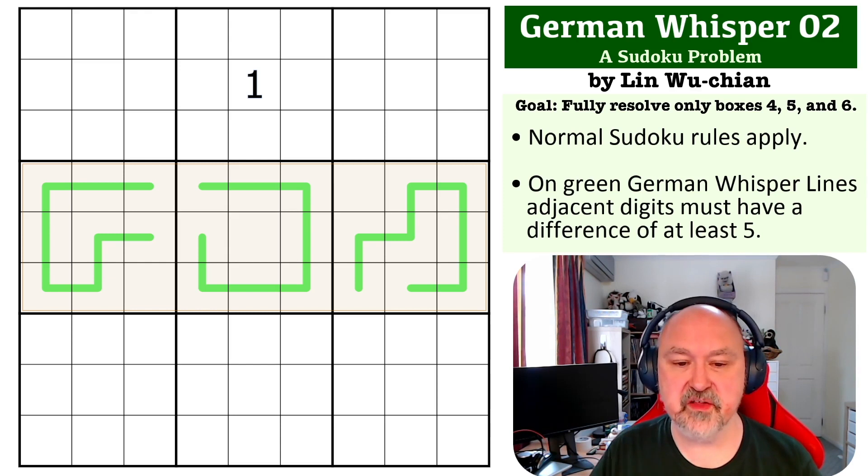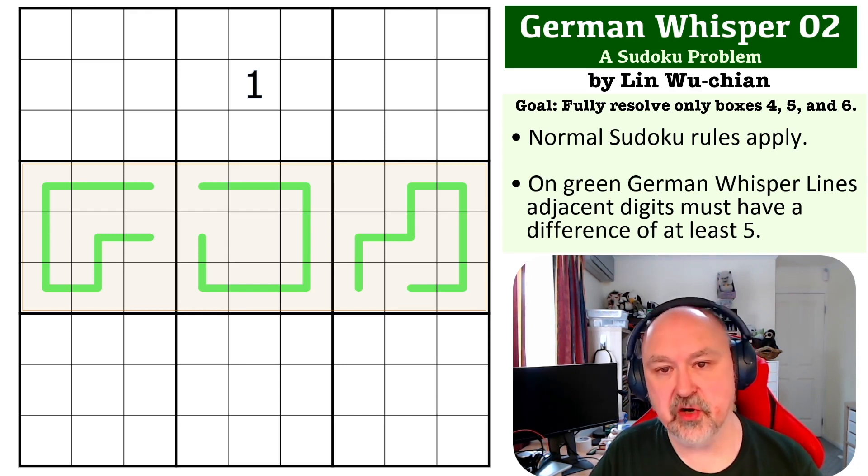The way this one works, you'll notice there's no Xs. The goal on this one is to fully resolve boxes 4, 5, and 6. The green lines are German Whisper lines, which means adjacent digits on the lines have to have a difference of at least 5.